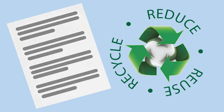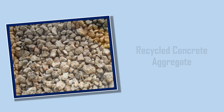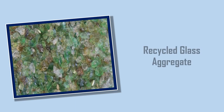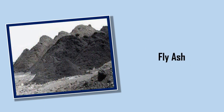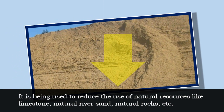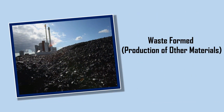The common materials used to produce green concrete are recycled demolition waste aggregate, recycled concrete aggregate, blast furnace slag, recycled glass aggregate, and fly ash. Apart from reduction of CO2, it is also being used to reduce the use of natural resources like limestone, natural river sand, natural rocks, and to utilize waste formed during production of other materials.